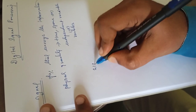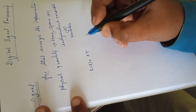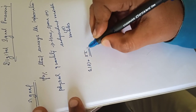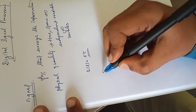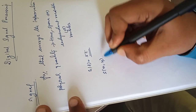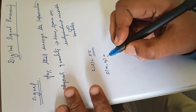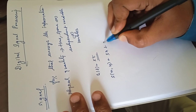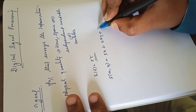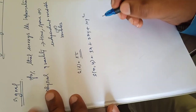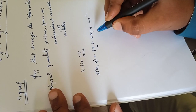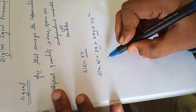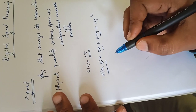For example, S1(t) = 5t — this is one type of signal; it varies with respect to only one independent variable t. Another one: S(x, y) = 3x + 2xy + 10y². Here you can find that two variables are there — x and y — so this is a signal with two independent variables. This is also one signal.